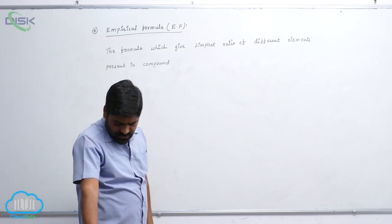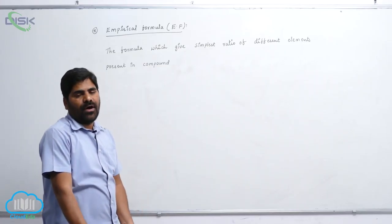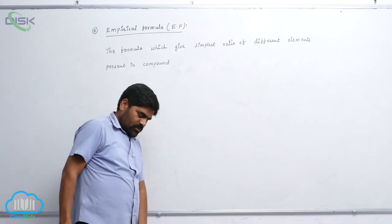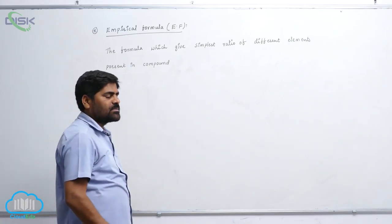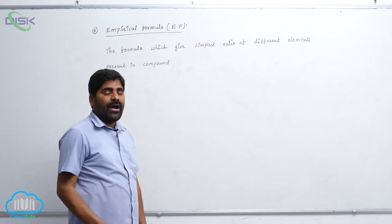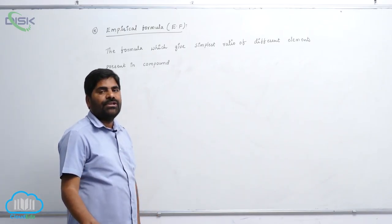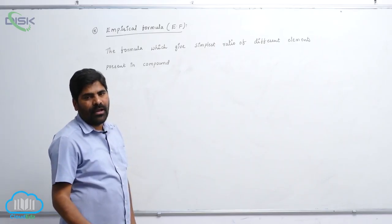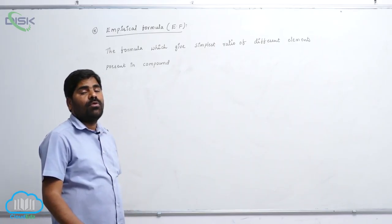So earlier I discussed molecular formula calculation based on the percentage of atoms. Number of atoms are calculated. The number of atoms equals to percentage times molecular weight of compound divided by atomic weight times 100.